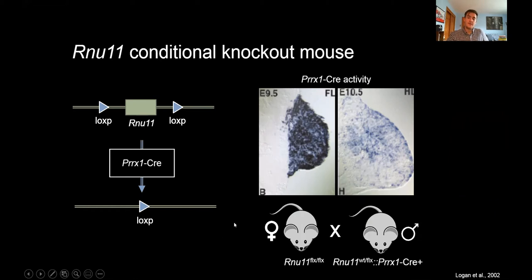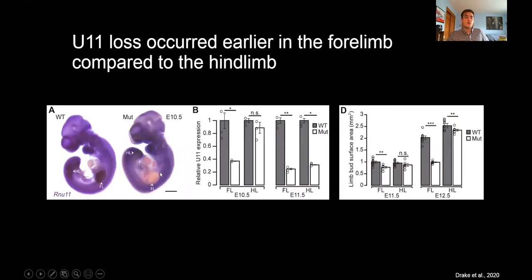When I crossed our U11-Flox-Flox mice to PRX1 Cre-positive mice, we indeed observed we were able to ablate the U11 SNRNA in the developing forelimb at E10.5 in this whole mount in situ of this mutant embryo compared to the wild type, whereas in line with PRX1 Cre, we did not yet observe loss of U11 in the hind limb at E10.5. We then quantified the reduction in U11 levels through qRT-PCR, where we found that the mutant forelimb at E10.5 had significantly reduced U11 expression, whereas it wasn't until E11.5 that the mutant hind limb showed reduced U11 levels significantly. In turn, we found that the limb bud surface area was significantly smaller in the mutant forelimb at E11.5, and it wasn't until one day later at E12.5 that we saw a significant reduction in the size of the mutant hind limb.